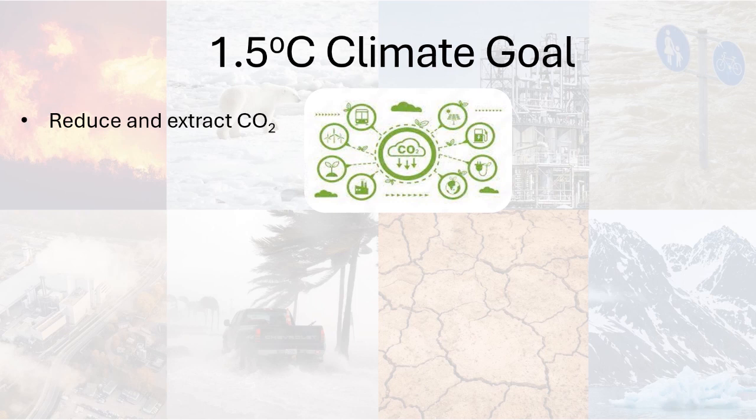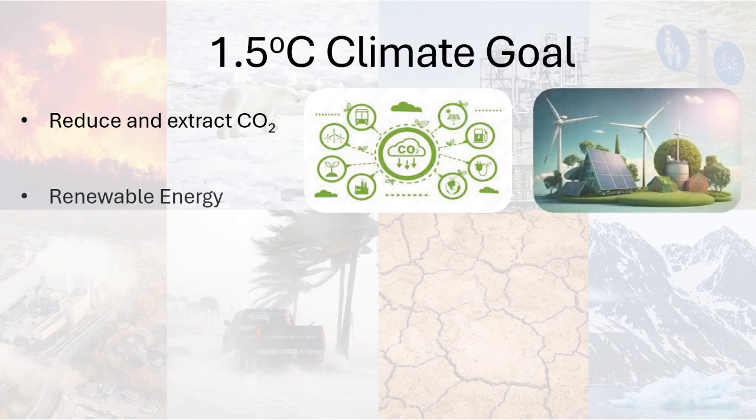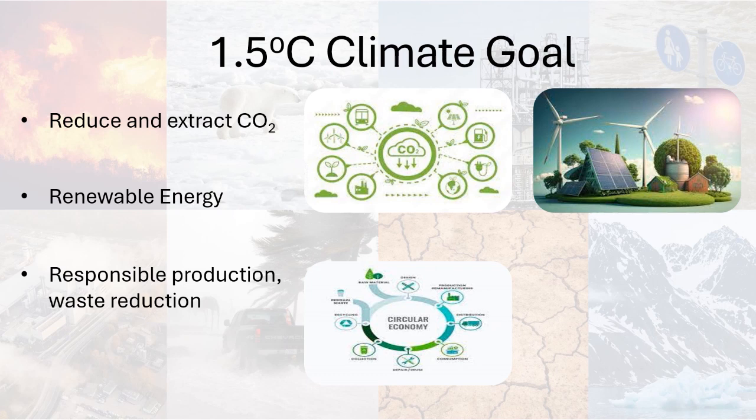Since most fossil fuel burning is used for electricity production, we need to find alternative ways to produce energy. Renewable sources are best when it comes to emission-free energy. On the other hand, we need to use energy more efficiently and be more conservative about energy use. We must also produce responsibly and efficiently to reduce wastage in landfills, which also releases GHGs into the atmosphere.